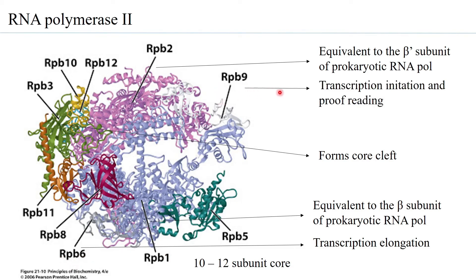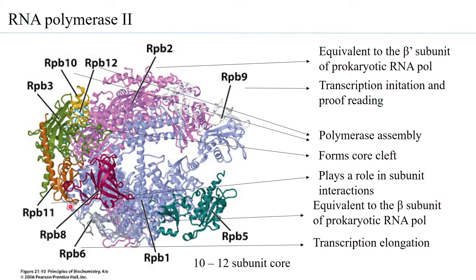RPB9 is responsible for transcription initiation and proofreading. RPB10 and RPB12 are small subunits required for complete polymerase assembly. RPB11 is actually the largest subunit in RNA polymerase 2 and has a role in subunit-subunit interaction, helping in the assembly of RNA polymerase 2. So from RPB1 to RPB12, each one contributes to the actual functioning of RNA polymerase 2.